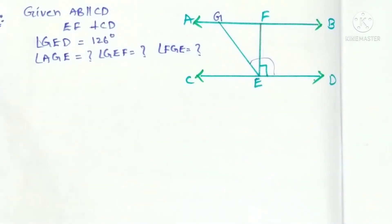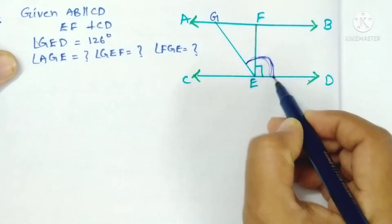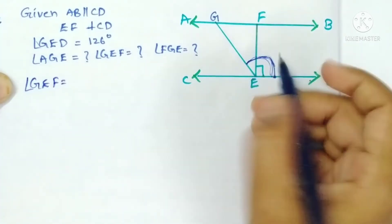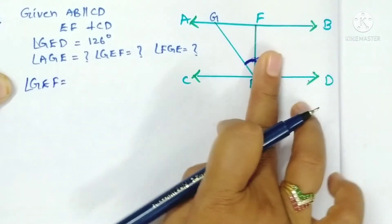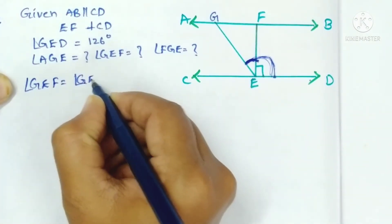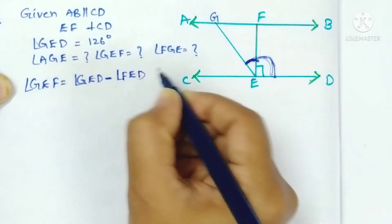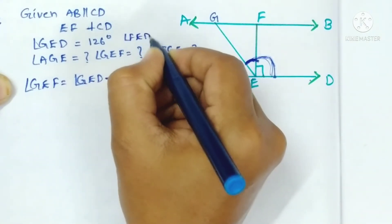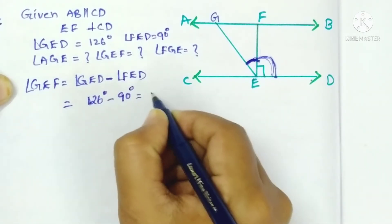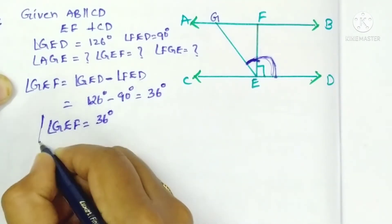Angle GEF is found by subtracting from the total angle. Angle GEF equals angle GED minus angle FED. Angle FED is 90 degrees as given in the problem, and angle GED is 126 degrees. So angle GEF equals 126 minus 90 equals 36 degrees.